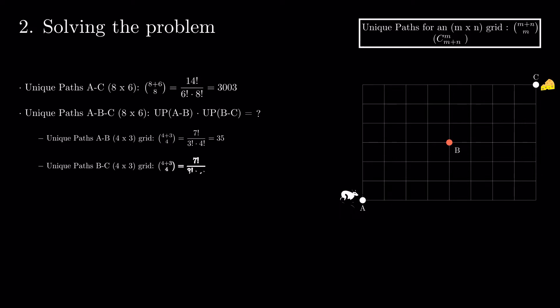This implies that the number of unique paths from A to C going through B is 1225. In conclusion, our final probability is equal to 1225 divided by 3003, which can be simplified to 175 divided by 429.